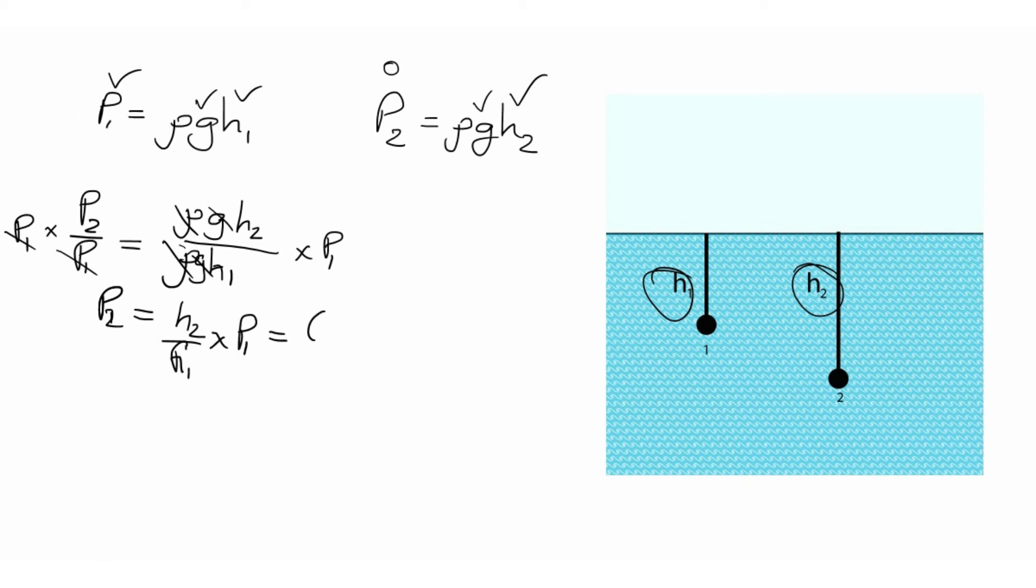So we know that H2 is equal to 9 meters. H1 is equal to 3 meters. And then P1 is equal to 28 kilopascals. Then if you put this to the calculator, this will give you 84.